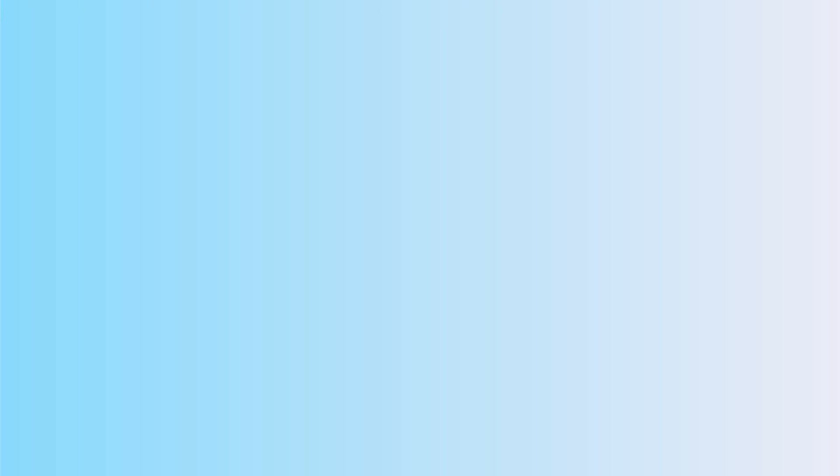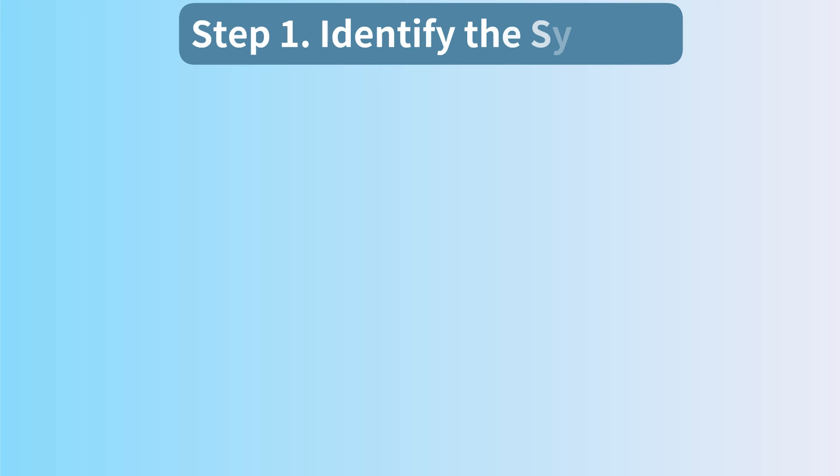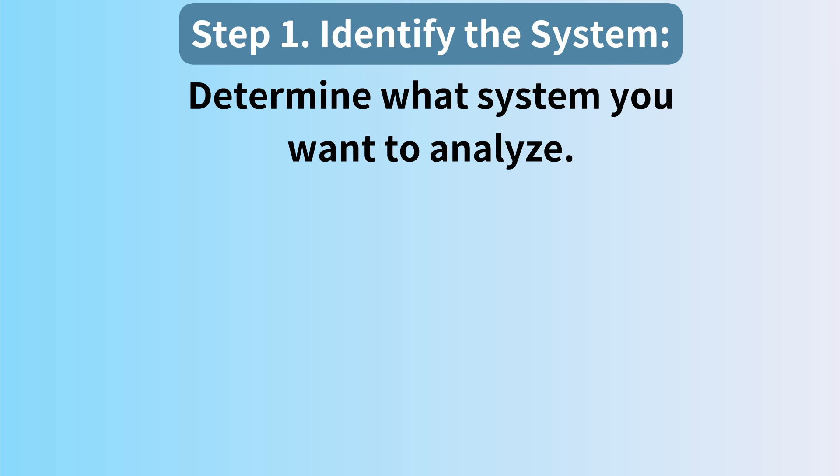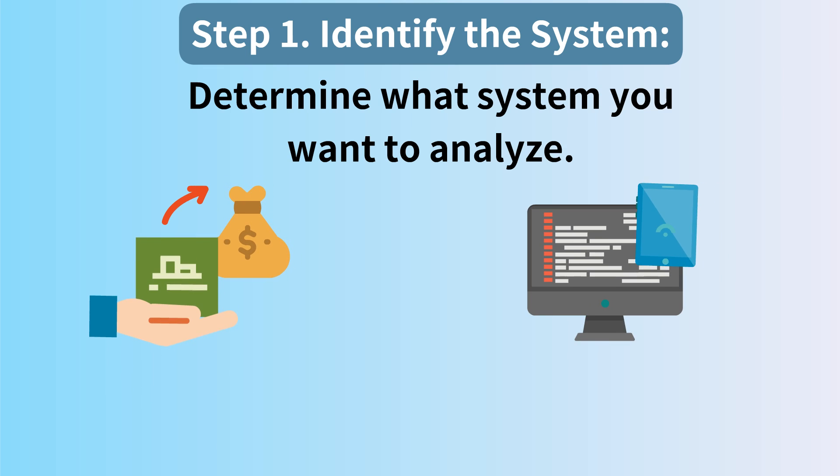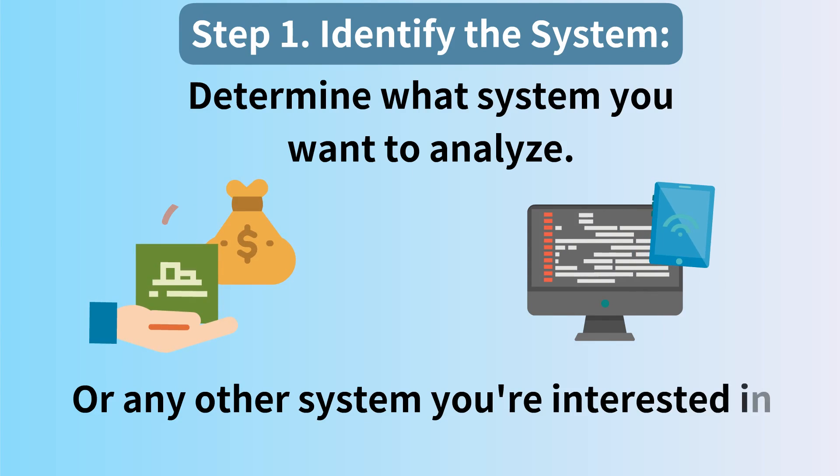Let's move on to the steps in system analysis. Step 1: Identify the system. Determine what system you want to analyze—it could be a business process, a software application, or any other system you're interested in.